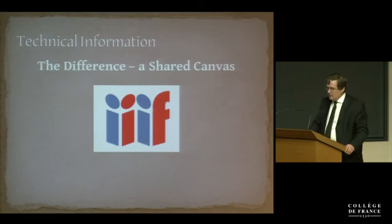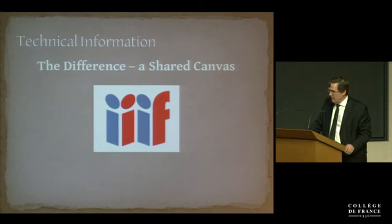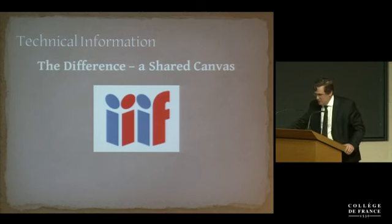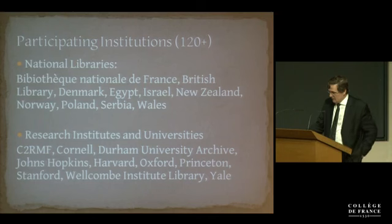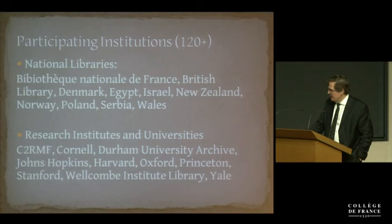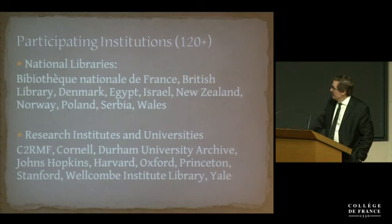Already, millions of images are available through IIIF-linked institutions, and the potential is almost limitless globally as more institutions join the system. There are at least 120 involved at the moment. For national libraries, you have the Bibliothèque Nationale, the British Library, and the national libraries of Denmark, Egypt, Israel, New Zealand, Norway, Poland, Serbia, and Wales, along with numerous research institutes and universities.